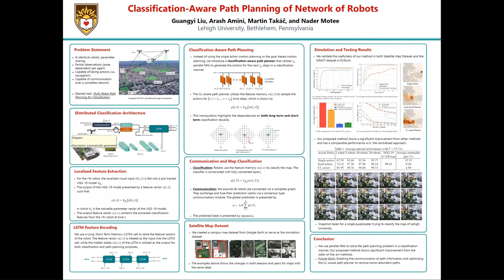We'll first start with the classification-aware path planner. Instead of using single-action motion planning or goal-based motion planning, we introduce the classification-aware path planner that utilizes T_p parallel neural networks to generate T_p actions for the next time steps. This can be done in a classification manner — that is, for the T_p time steps, there exists a finite number of possible paths. Our goal is to classify the most beneficial paths from all these possible combinations of finite paths, so the path planning problem is solved as a classification problem.